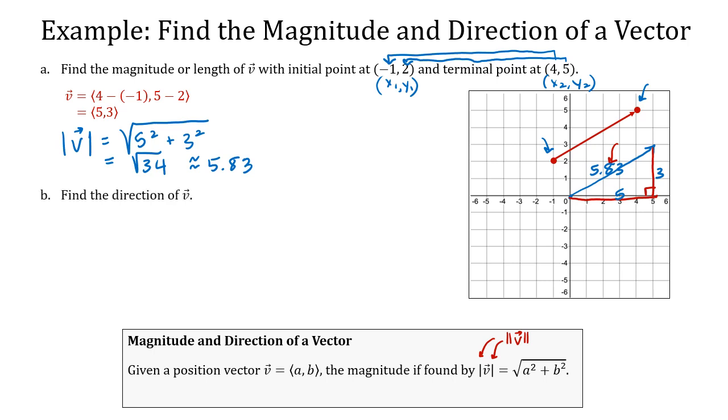All right, second part, find the direction of vector V. The direction of the vector is equal to the angle that's formed with the horizontal positive axis, and we're going to just call that theta. So, the angle that's formed with the positive horizontal axis. So, in this picture, that would be the theta that you see down on the bottom left of this picture.